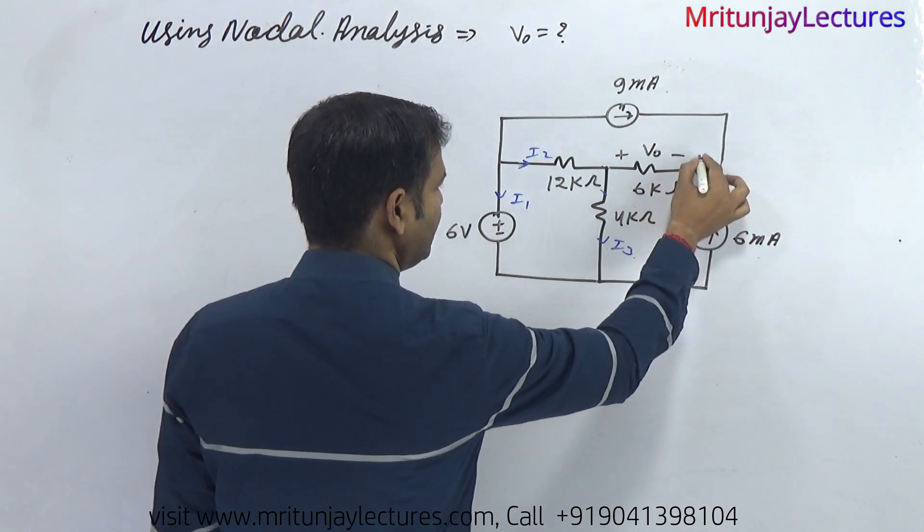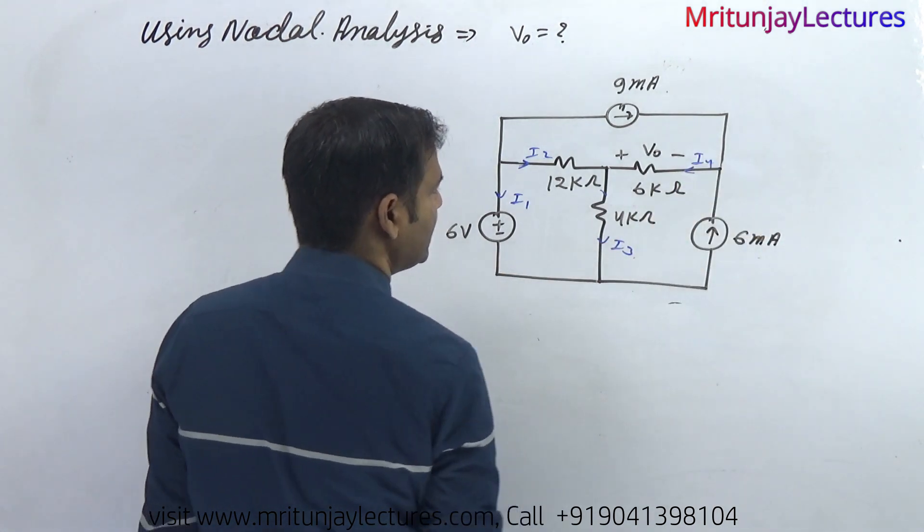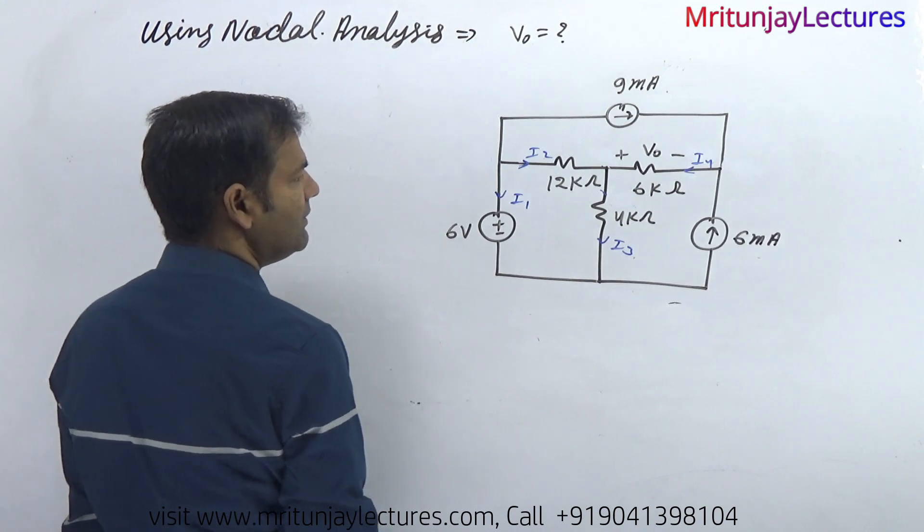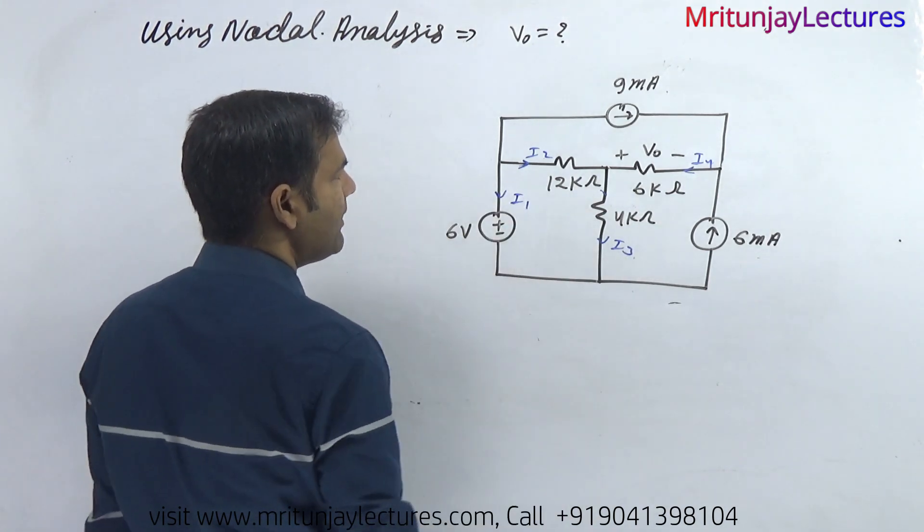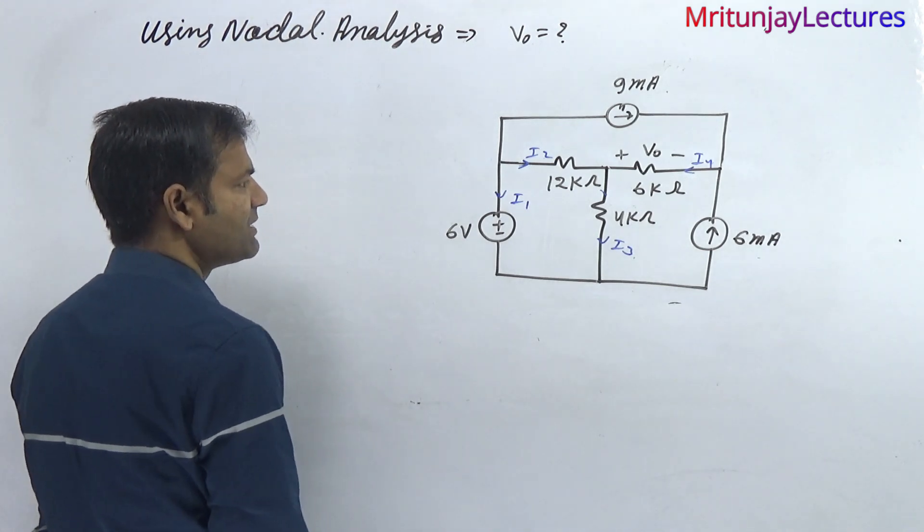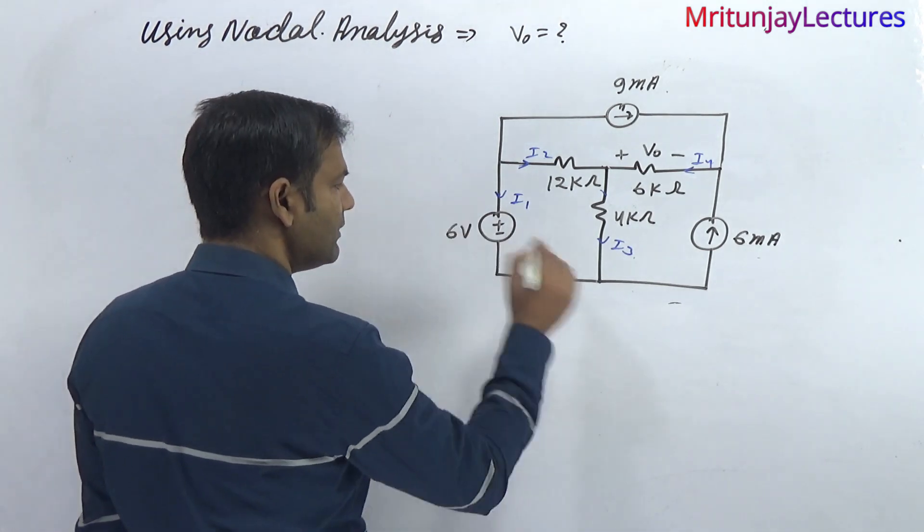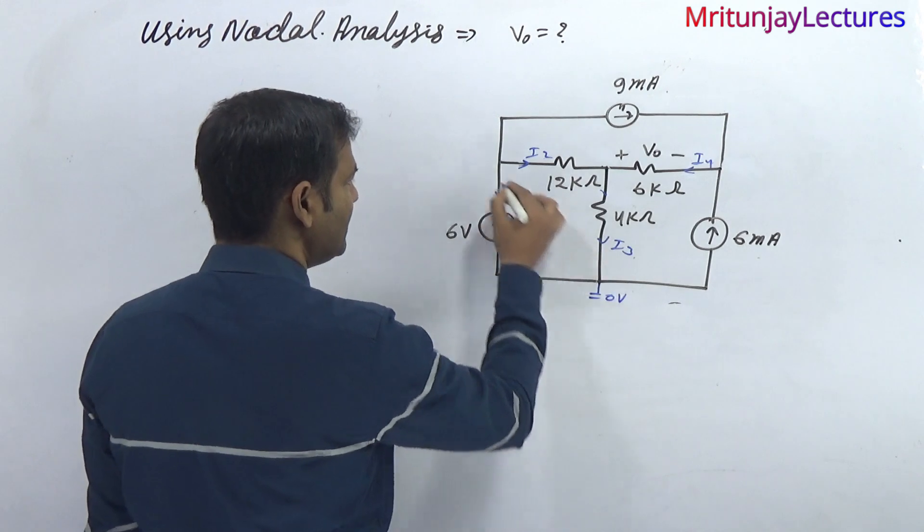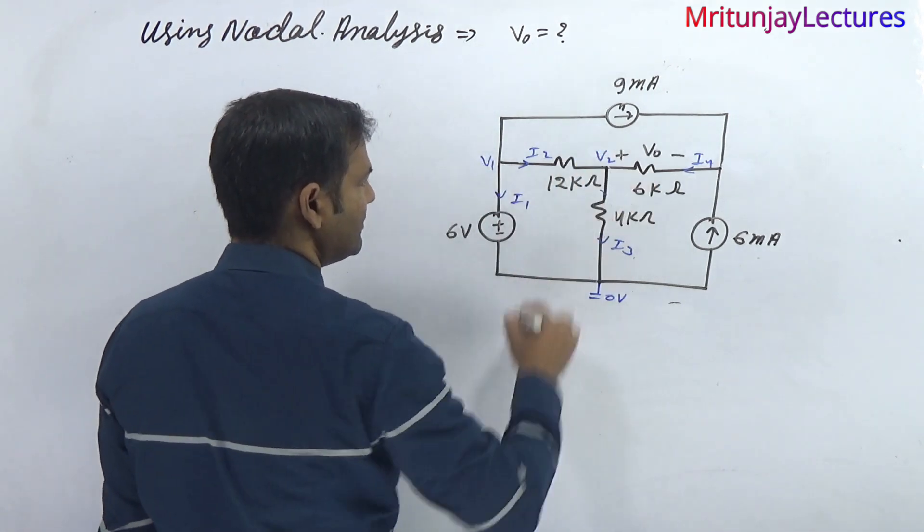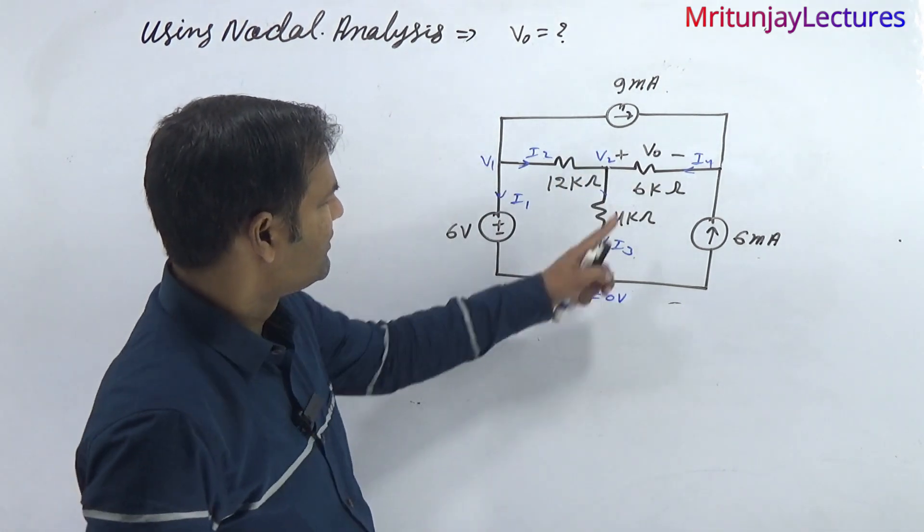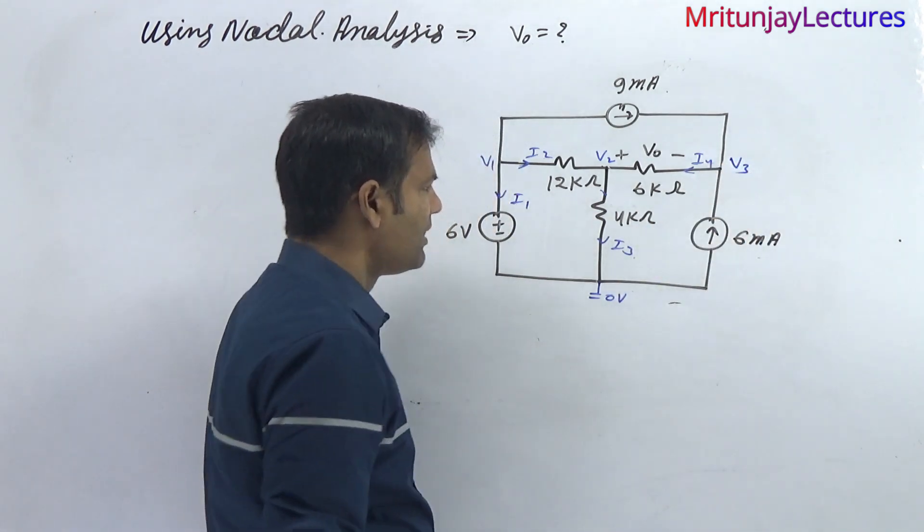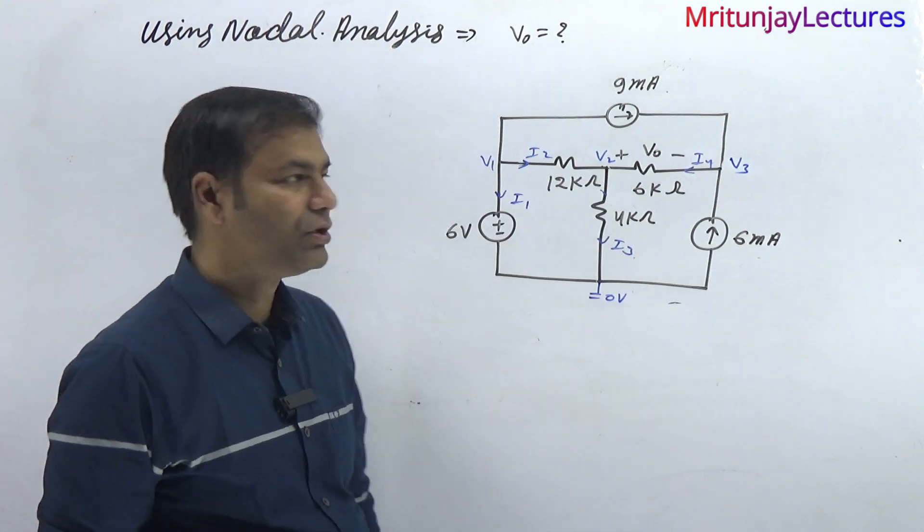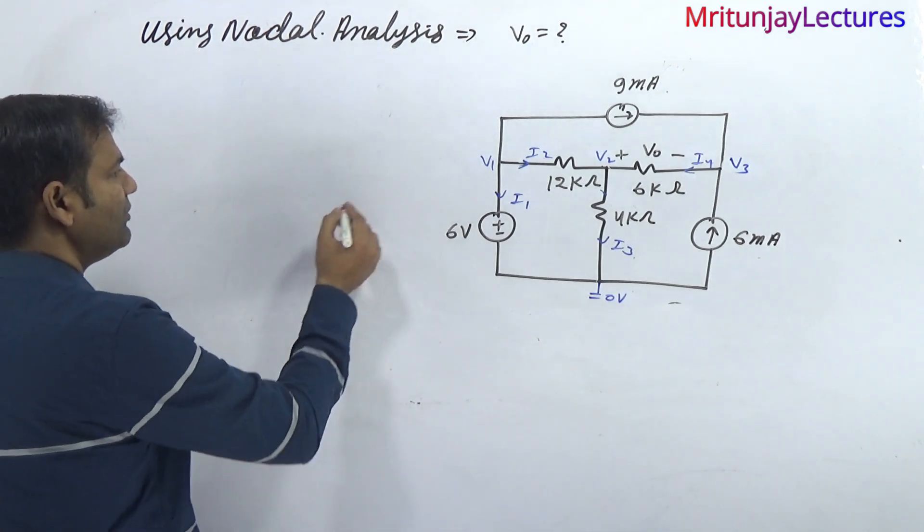After that, the next step is identifying the reference node, which is V1, and here is V2. This one is V3. Our motto is to determine V naught.